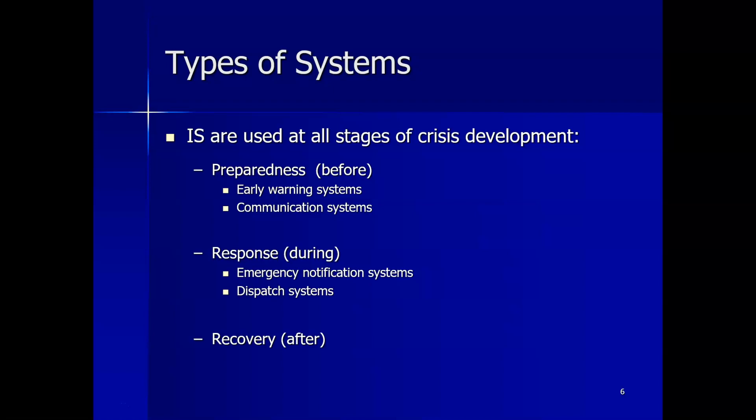In addition to having application to an organization's operations, information technology has application to community emergency response efforts. It has been used in many different ways to address crisis at all stages of their development. These systems are tools to assist in preparing for a crisis before it occurs, responding to it during the event, and recovering after the crisis has struck. These stages of crisis management are also known as preparedness, response, and recovery.